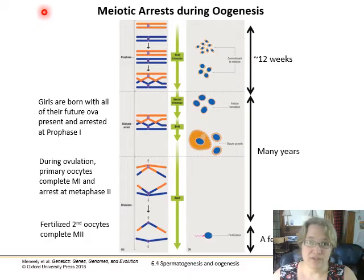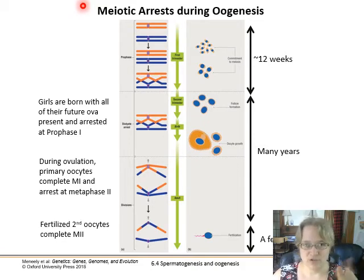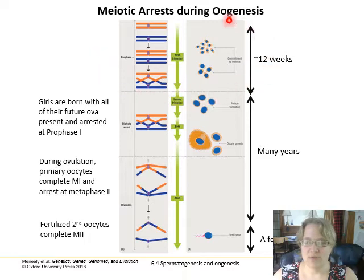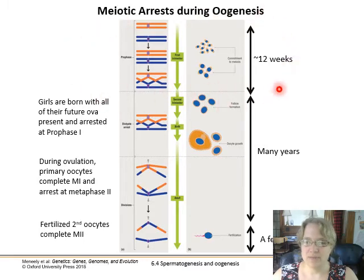In contrast, spermatogenesis is occurring basically all the time in males with viable testes, through a constant production of sperm. Whereas in oogenesis, the commitment to meiosis occurs within the first 12 weeks of gestation. So while you're in utero, females are producing these oocytes, and then meiosis basically stops.